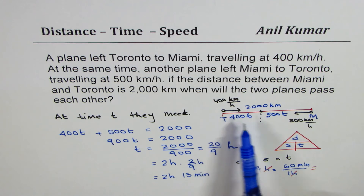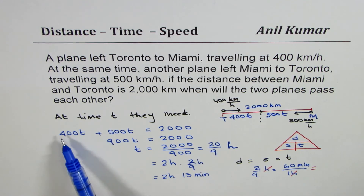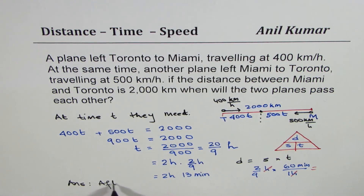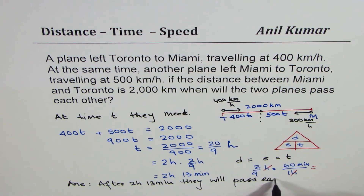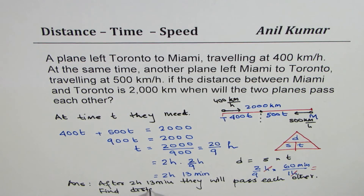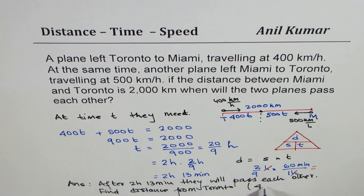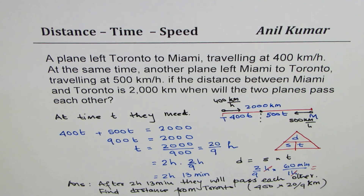As an added exercise, you can find the distance from Toronto where they meet, by substituting t = 20 over 9 into the distance formula. The answer will be 400 times 20 over 9 kilometers from Toronto. The main answer to when the two planes pass each other is after 2 hours and 13 minutes.